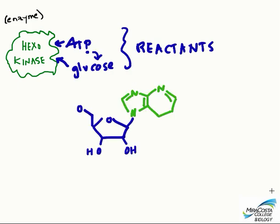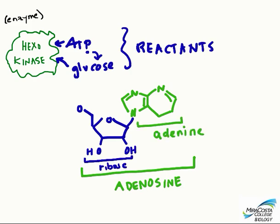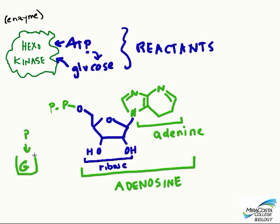Recall from an earlier lesson that ATP looks like this. There's the adenosine, which is a ribose sugar attached to the base adenine, and this is attached to three phosphates. ADP, or adenosine diphosphate, is the same thing but with only two phosphates. In this reaction, that third phosphate group is now going to be covalently bonded to the glucose, which is now called glucose phosphate, and instead of ATP we now have ADP.